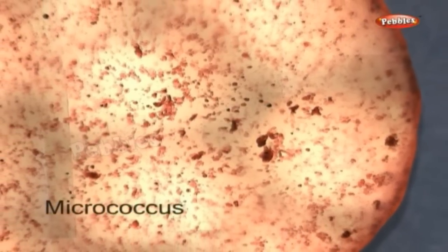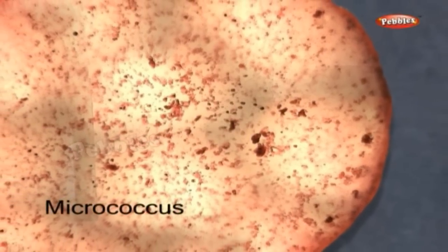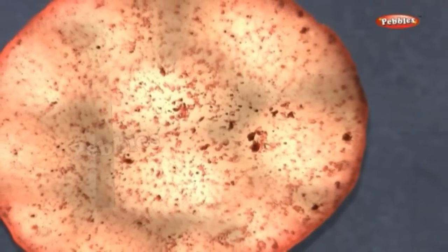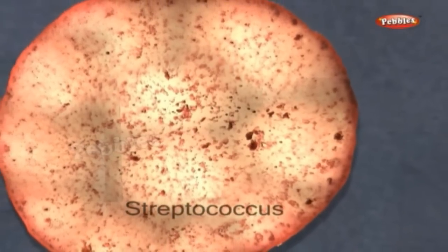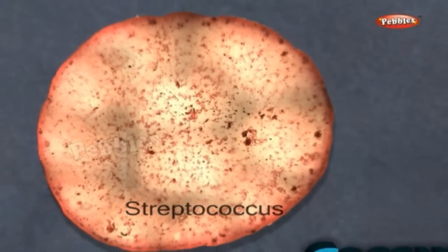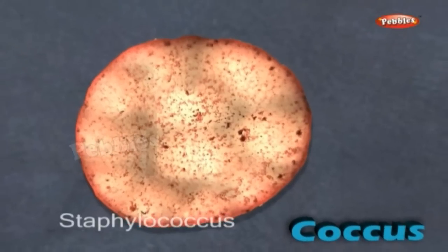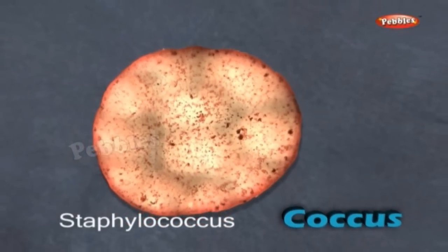Coccus bacteria are spherical, round in shape. The spherical forms occur either singly, called Micrococcus; in groups of two, called Streptococcus; or in groups resembling bunches of grapes, called Staphylococcus.